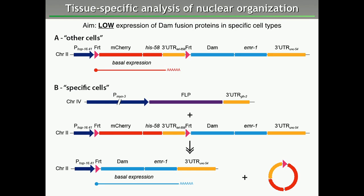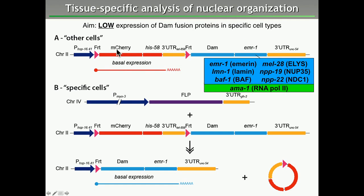So what we designed instead is a construct in which we have an FRT-flanked mCherry-histone cassette sitting upstream of our DAM fusion. In most cells we get only very basal expression of mCherry-histone, but in specific cells where we express the flipase, the upstream cassette is flipped out and those specific cells then get basal expression of our DAM fusions. We currently have six different nuclear proteins under analysis, and we are also cloning AMA-1 to study genes associated with RNA Pol II transcription.